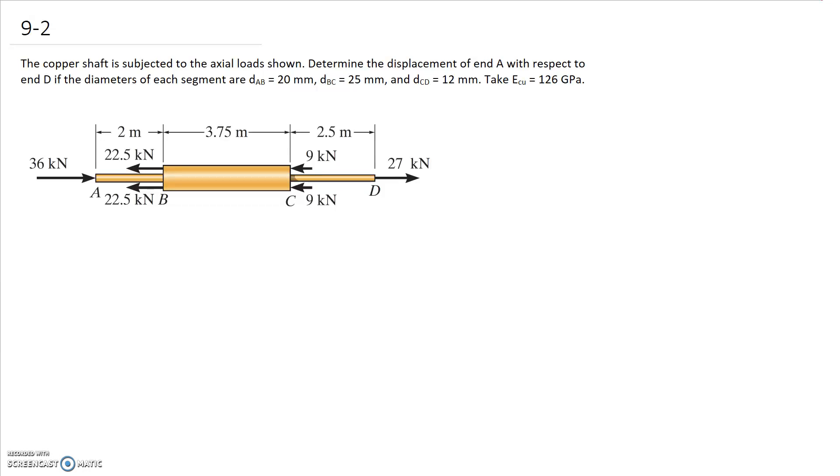So the copper shaft is subjected to the axial loads shown. Determine the displacement of end A with respect to end D if the diameters of each segment are 20, 25 and 12 millimeters and we're told Young's modulus is 126 gigapascals.